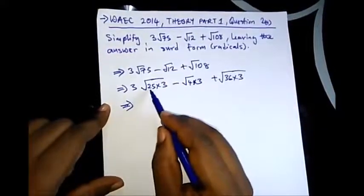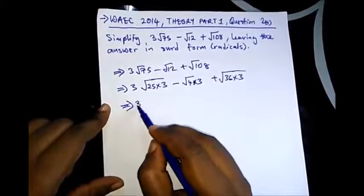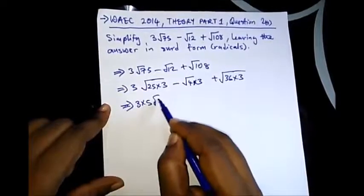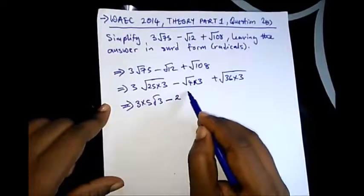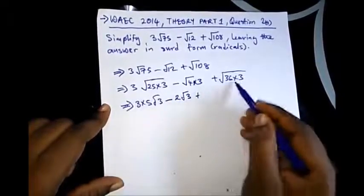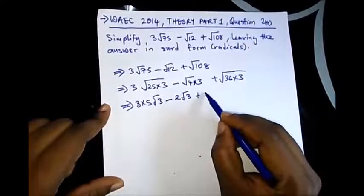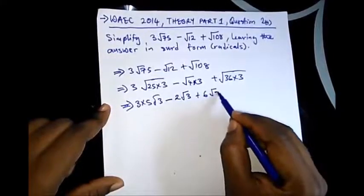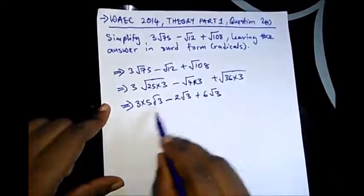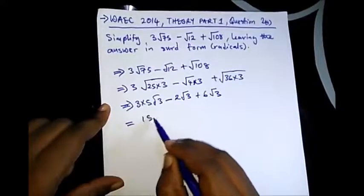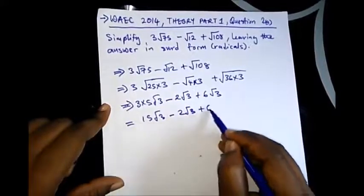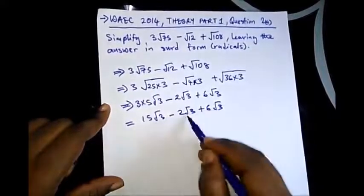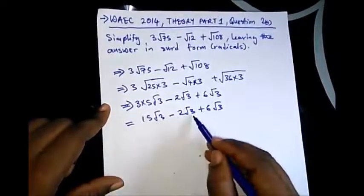Let's bring out the roots. The square root of 25 is 5, so we have 3×5√3 minus square root of 4, bring this out 2√3, plus the square root of 36 is 6, so bring this out 6√3. So from here we are left with 15√3 - 2√3 + 6√3.